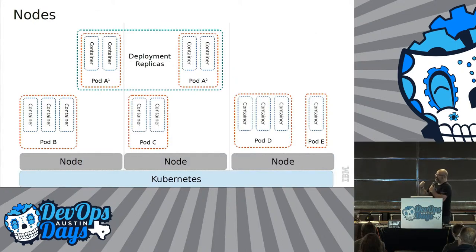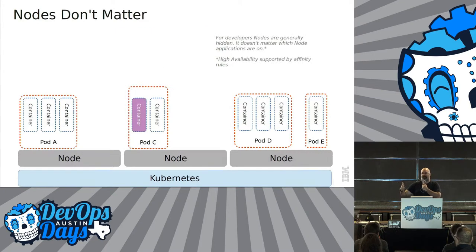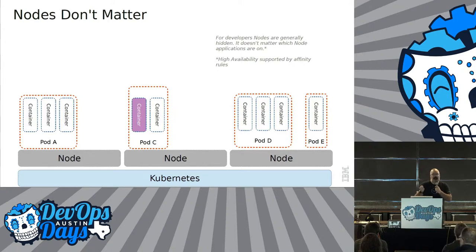There are these things called nodes, and that's the actual level of compute that Kubernetes uses. As you can see, it crosses every single machine. A node can be anything that runs a CPU, ranging from a Raspberry Pi to whatever. But most importantly, nodes don't actually matter. When you look at Kubernetes, all it is is a shared API to compute, and it will run exactly what you tell it to run.